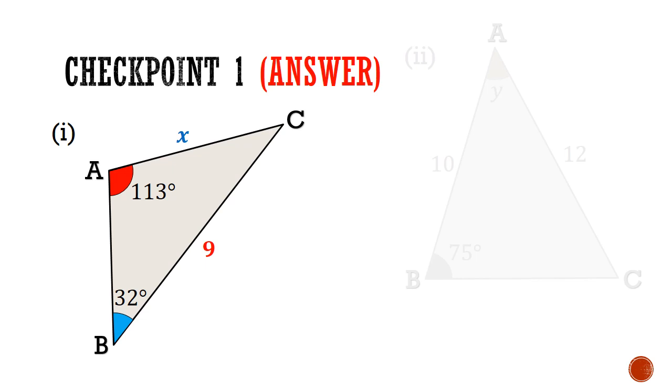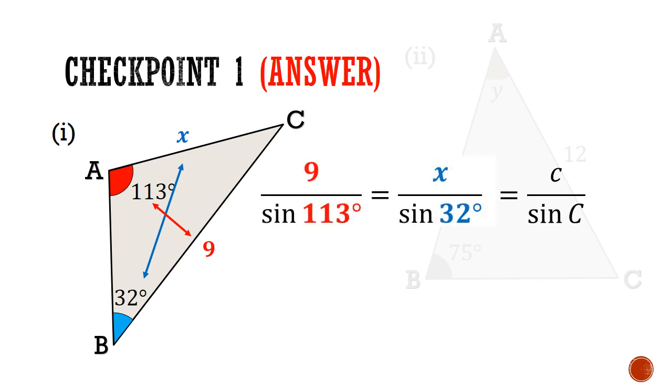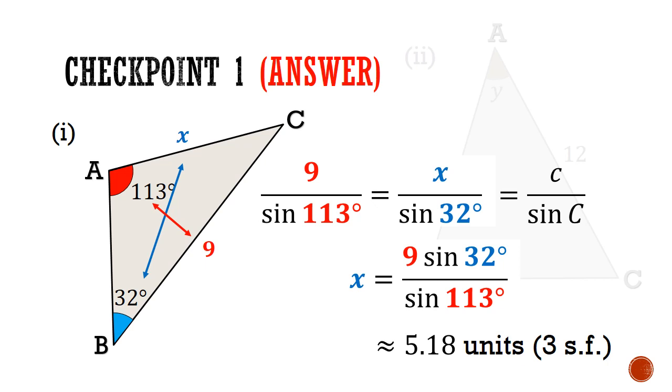Let's now go through the answers. In part 1, we are given unknown side X which is opposite the angle 42 degrees. We are also given a side 9 that is opposite the angle 113 degrees. This allows us to pull out the sine rule and substitute the unknown values inside. We are now going to make X the subject. Evaluating this tells us that X is 5.18 units to 3 significant figures.